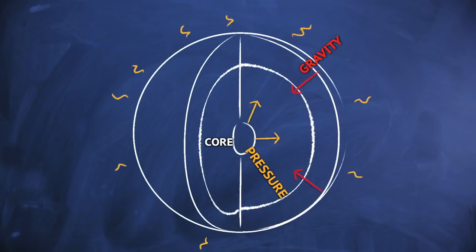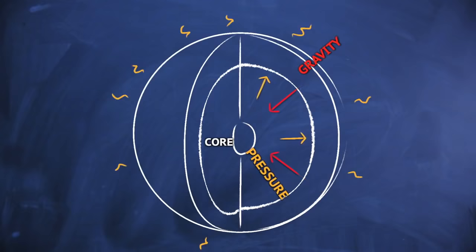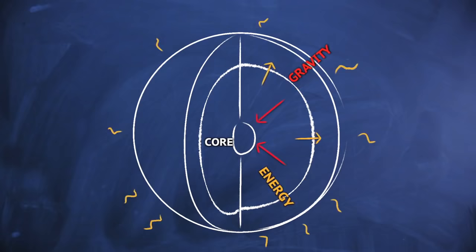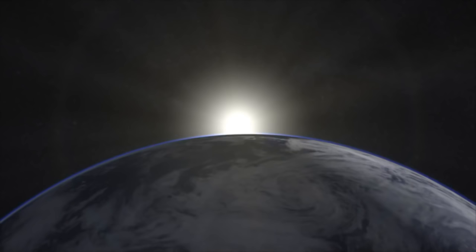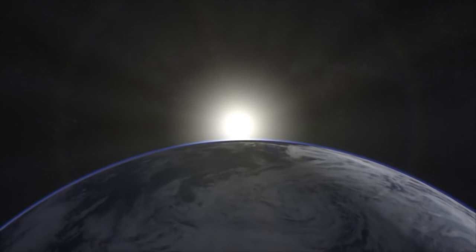However, the chain also contains other secondary processes, some very rare, which produce other particles and energy. These nuclear reactions are the only feasible way to continuously produce the amount of energy observed for billions of years.